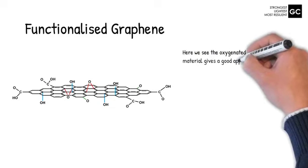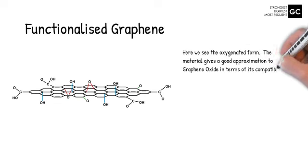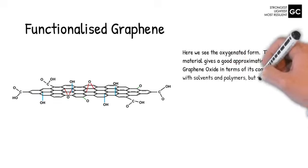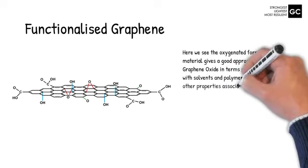The material gives a good approximation to graphene oxide in terms of its compatibility with solvents and polymers, but still retains other properties associated with graphene.